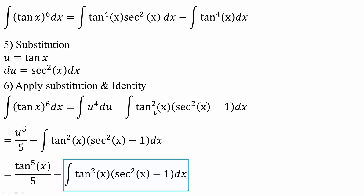I went ahead and said tan squared x times secant squared x minus 1, because tan squared x times that piece is tan raised to the fourth x — they're equivalent. The integral of u raised to the fourth du is pretty simple: I get u raised to the fifth divided by five. Next I swap u with tan x, giving tan raised to the fifth x divided by five, minus the remaining integral.